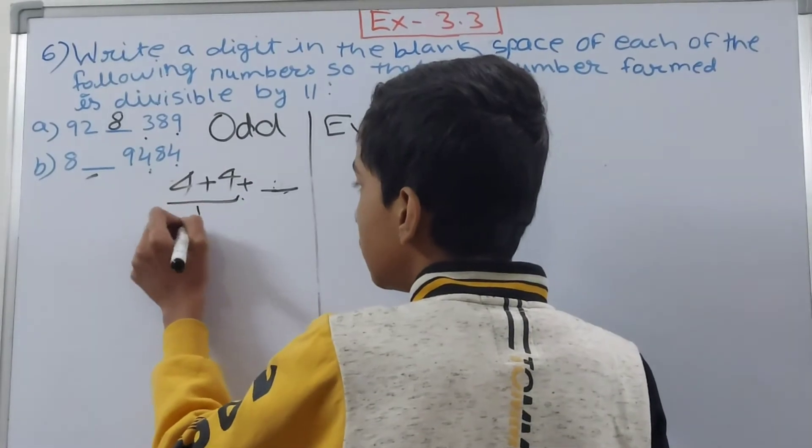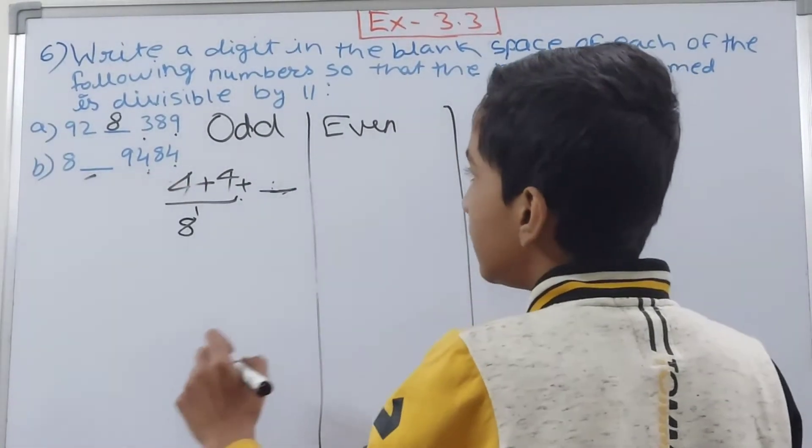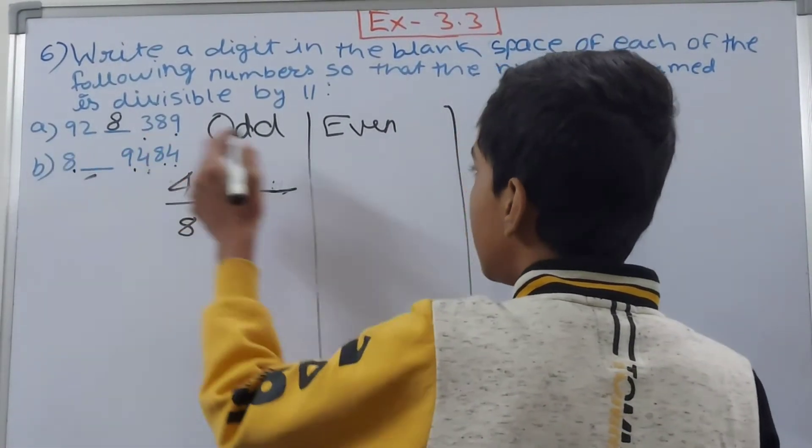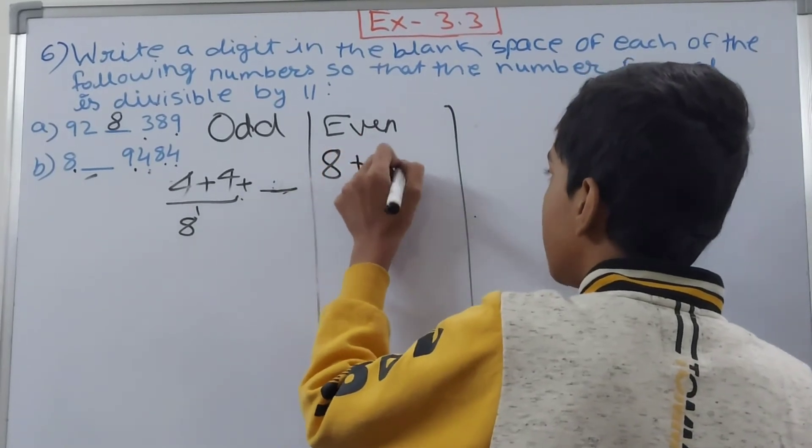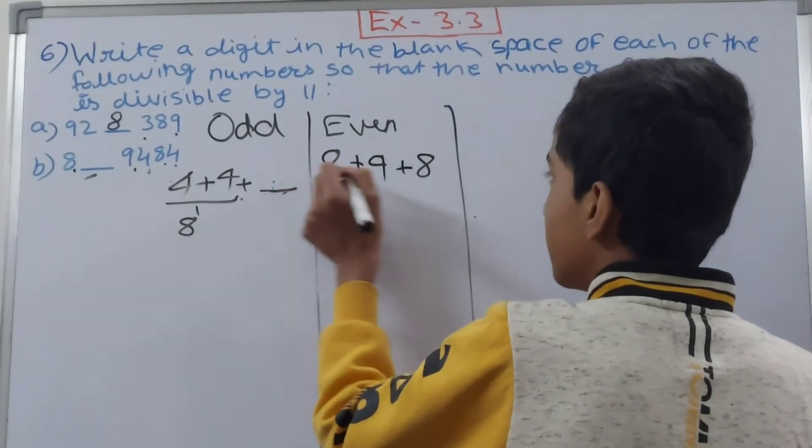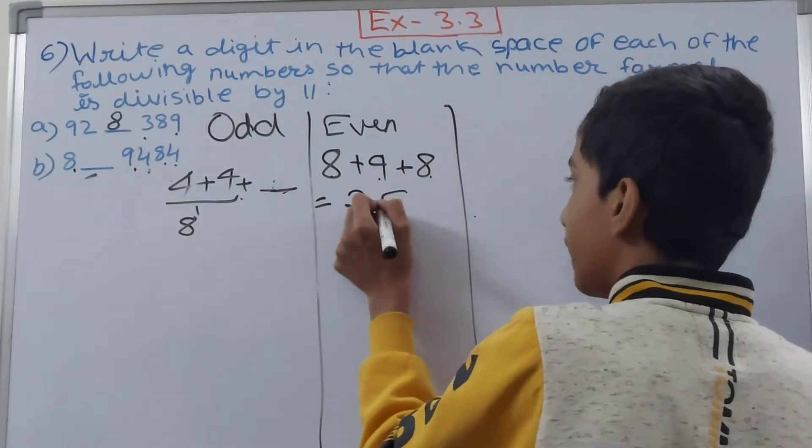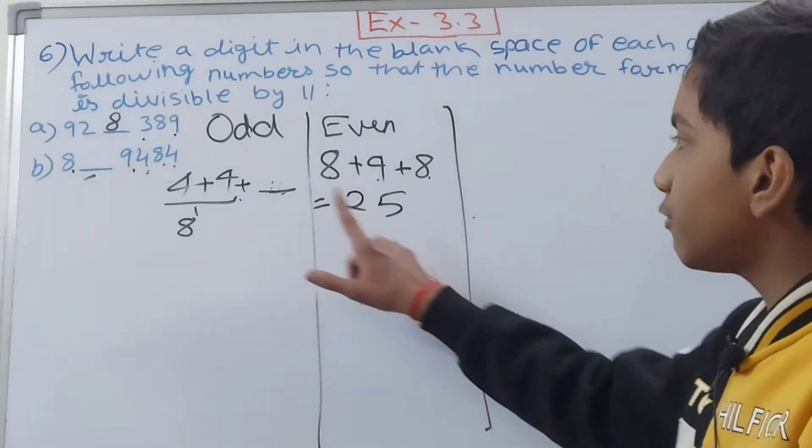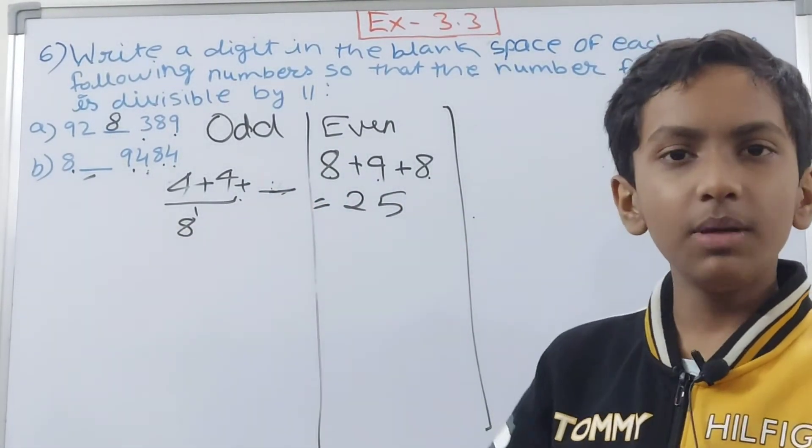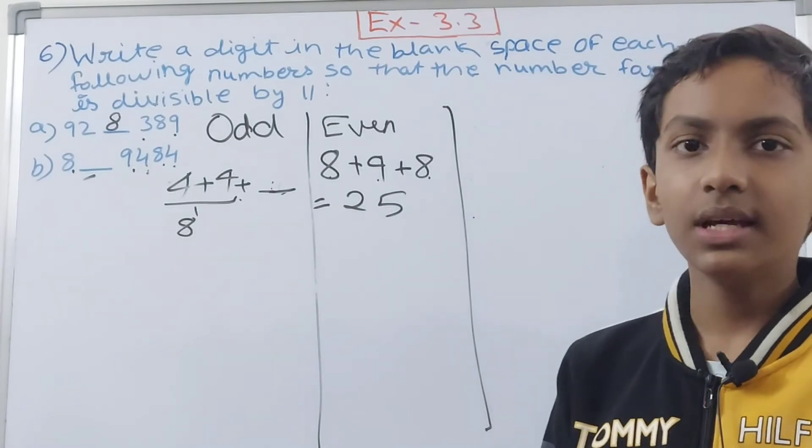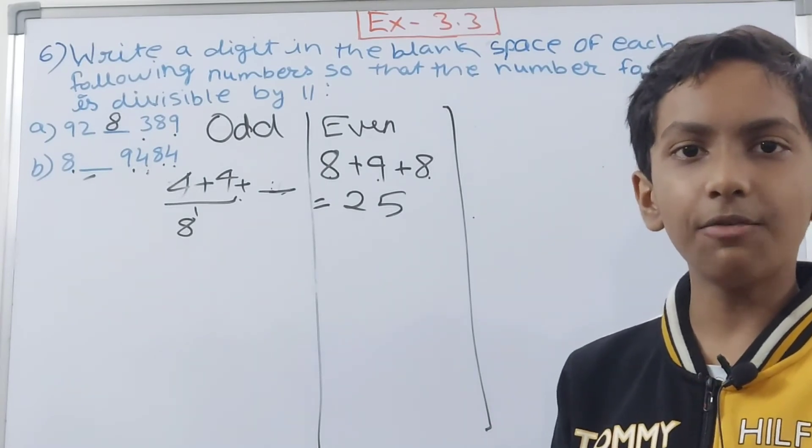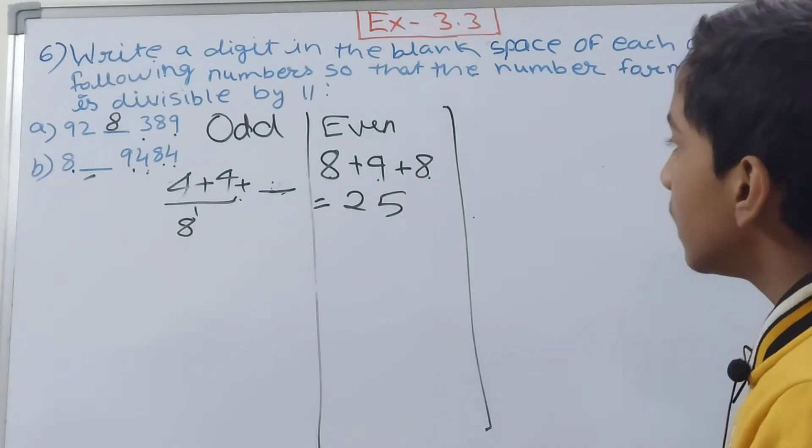Now at the even places we have 8, 9, 8. So 8 plus 9 plus 8: 8 plus 8 is 16, plus 9 is 25. Now 25 minus 8 that will be 17. 17 is not a multiple of 11 but we have to make it divisible by 11.